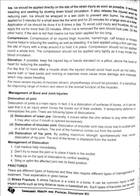Dislocation of the shoulder joint may occur due to a sudden jerk or a fall on a hard surface. The end of the humerus comes out of the socket. Dislocation of the hip joint may occur by putting maximum strength spontaneously. The end of the femur is displaced from the socket.